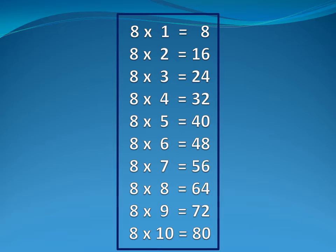Now eight table. Eight one is eight. Eight two is sixteen. Eight three is twenty-four. Eight four is thirty-two. Eight five is forty.